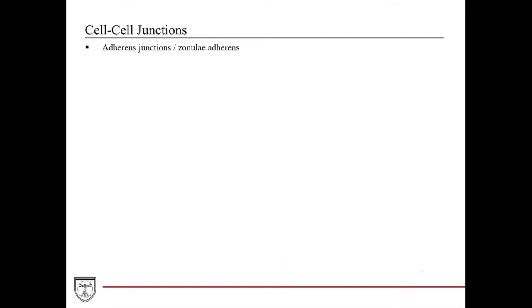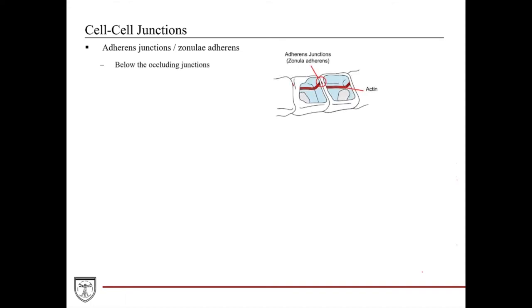Next, we have the adherence junctions, also known as the zonula adherens. The adherence junctions are positioned just below the occluding junctions. Much like the occluding junctions, these adherence junctions go all the way around the cell membrane at its periphery, much like a belt, positioned just below the tight junction.